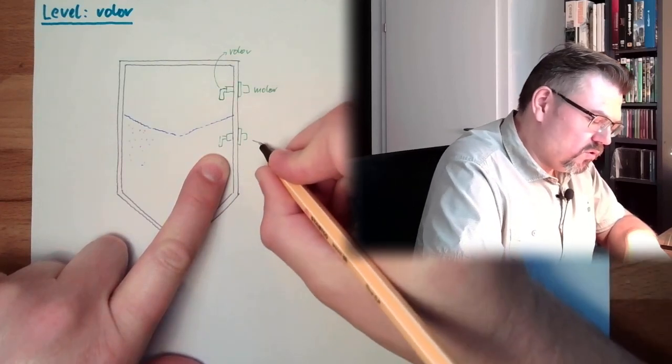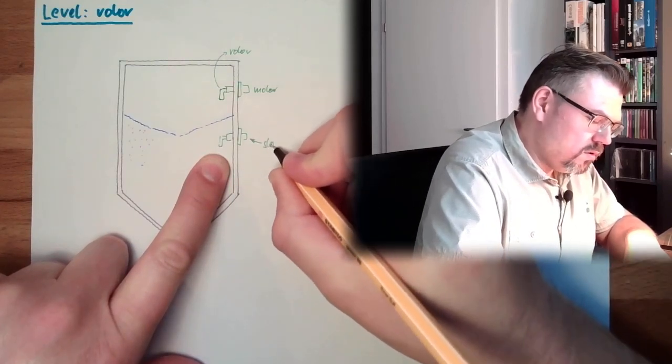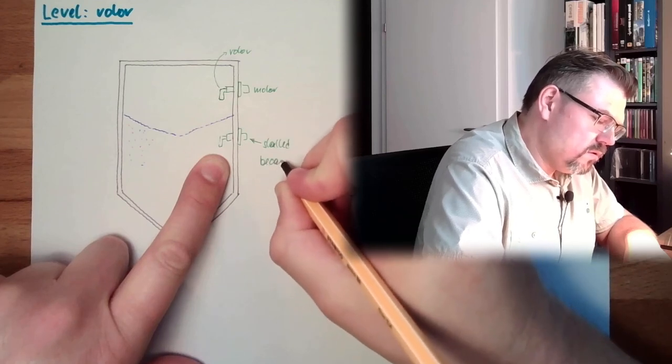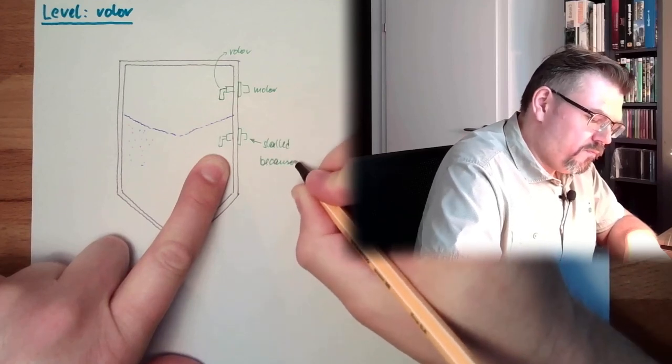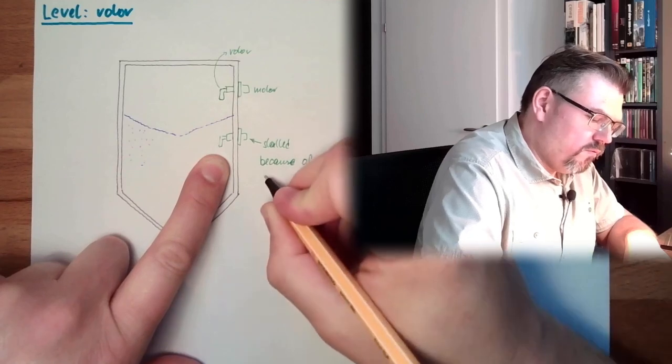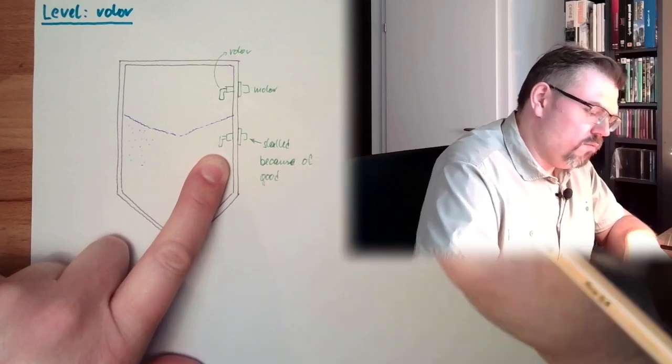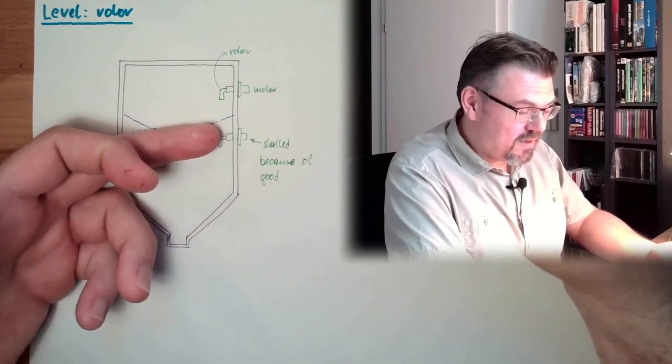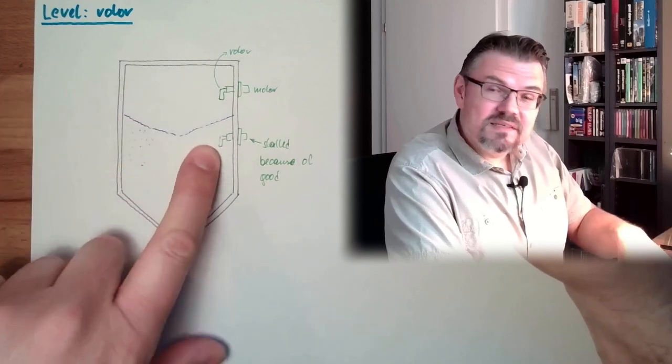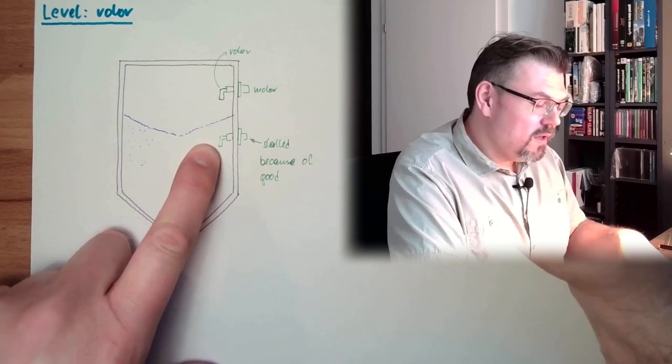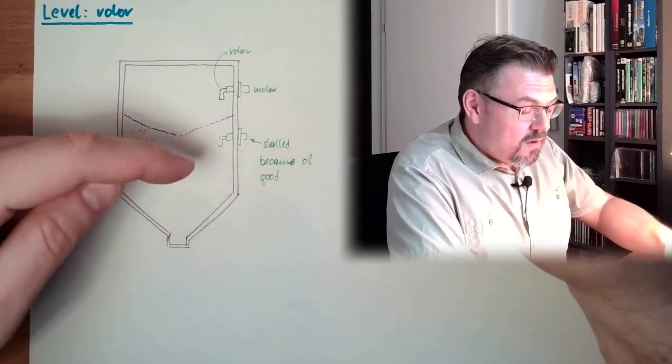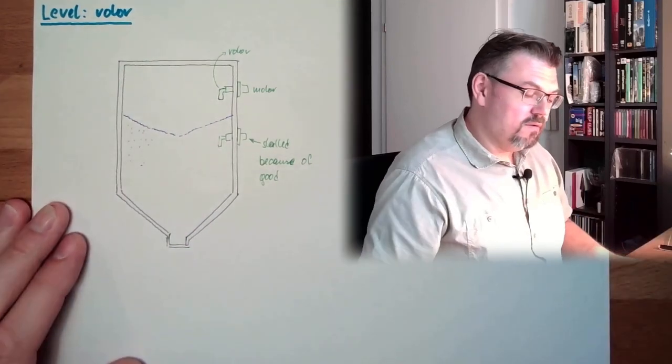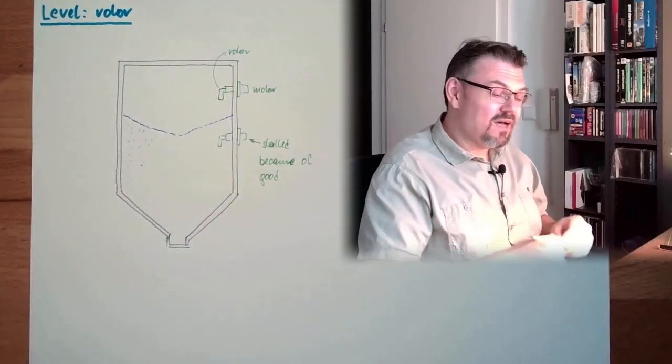Stalled because of bulk good, bulk material, and this I can detect. I can detect if this is stalled or not, and then I know if this is stalled and this is not, then the level must be somewhere in between. That's it, this is how this is working.